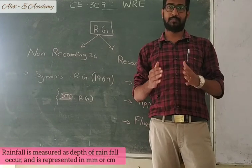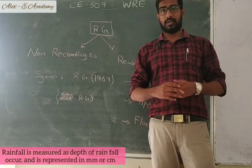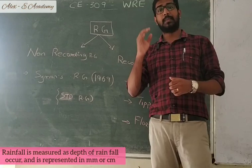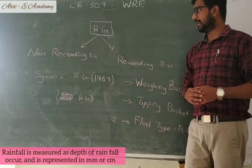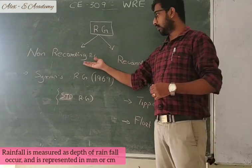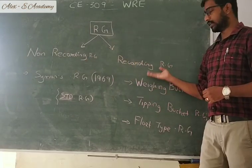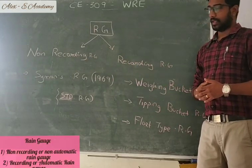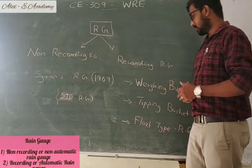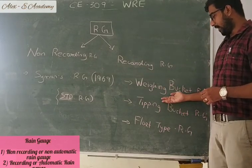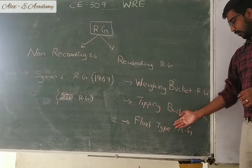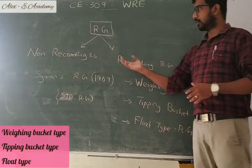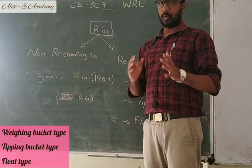Rain gauges are mainly classified into non-recording rain gauges and recording type rain gauges. In recording type rain gauges, there are three types: weighing bucket rain gauges, tipping bucket rain gauges, and float type rain gauges.